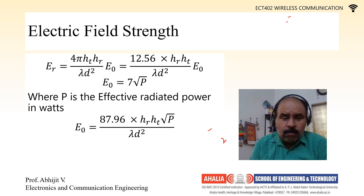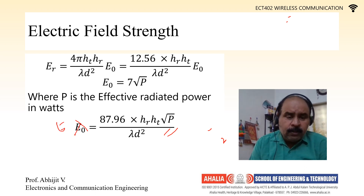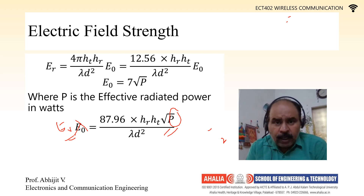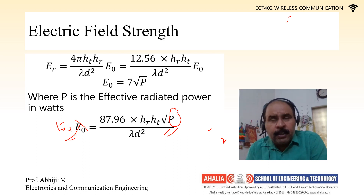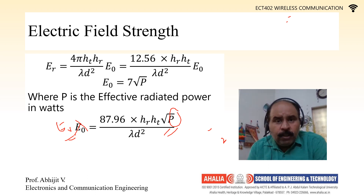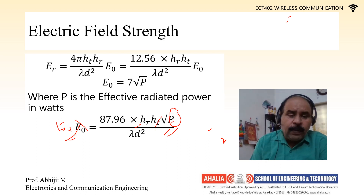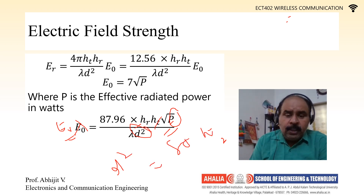I believe you understood how to find the resultant electric field when given the radiated power. There is a problem in your syllabus related to this. When given the effective radiated power, the antenna heights, and asked to find D, rearrange: D² = 88·Ht·Hr·√P / (λ·E_R).